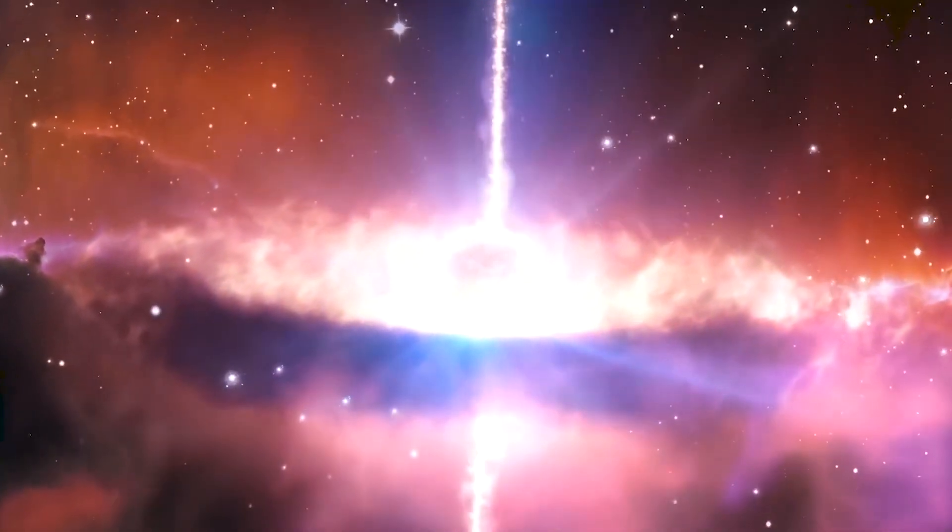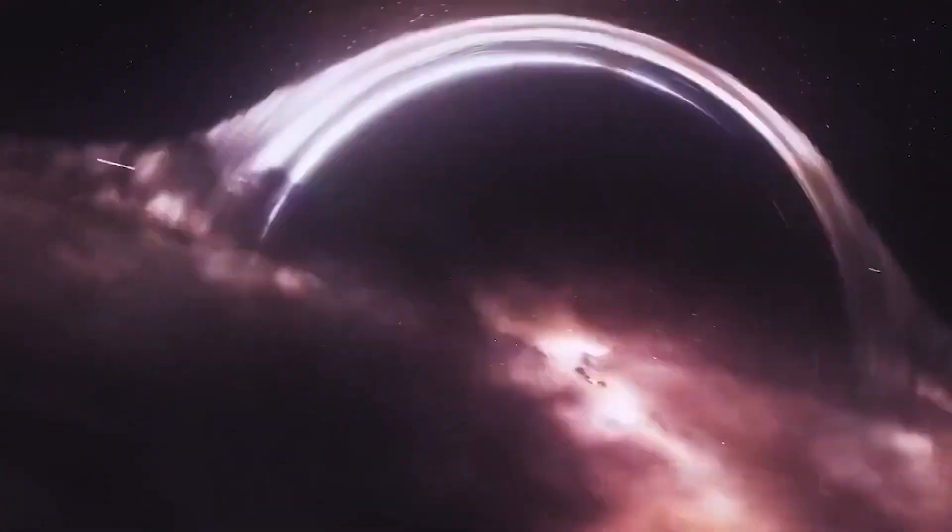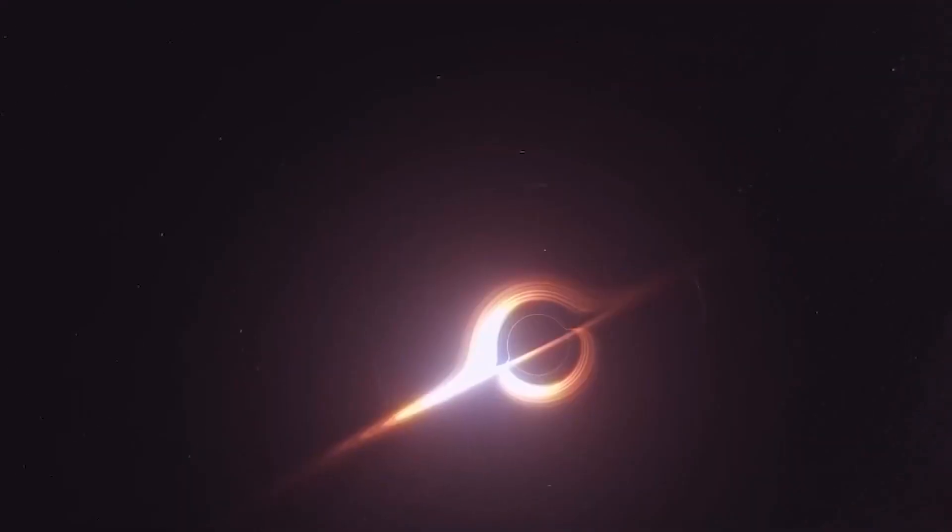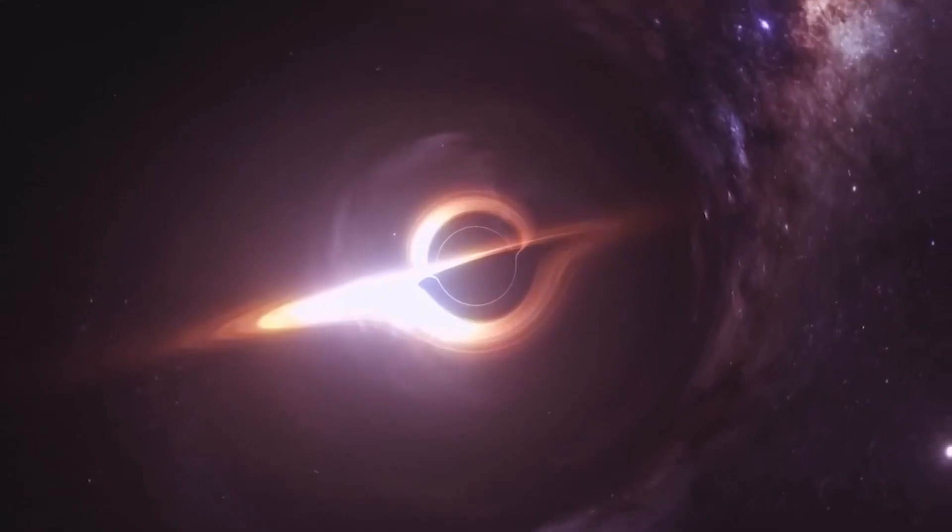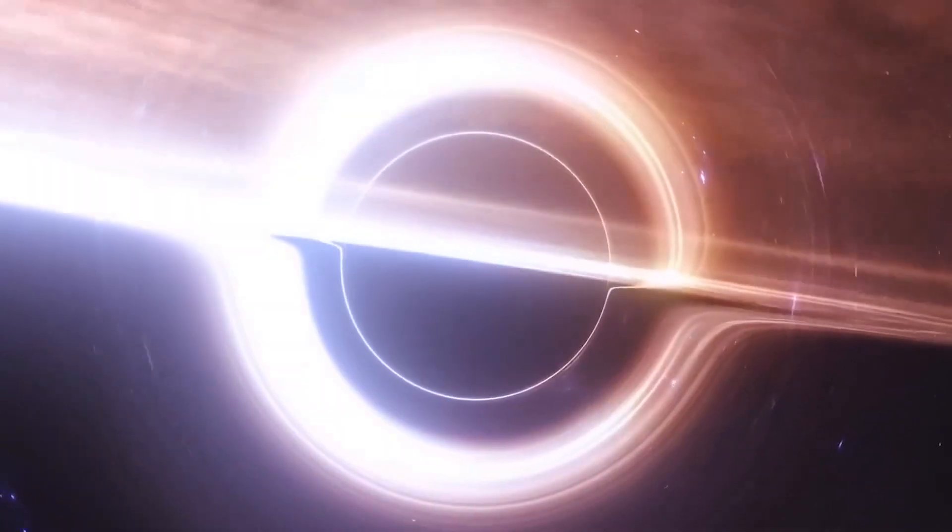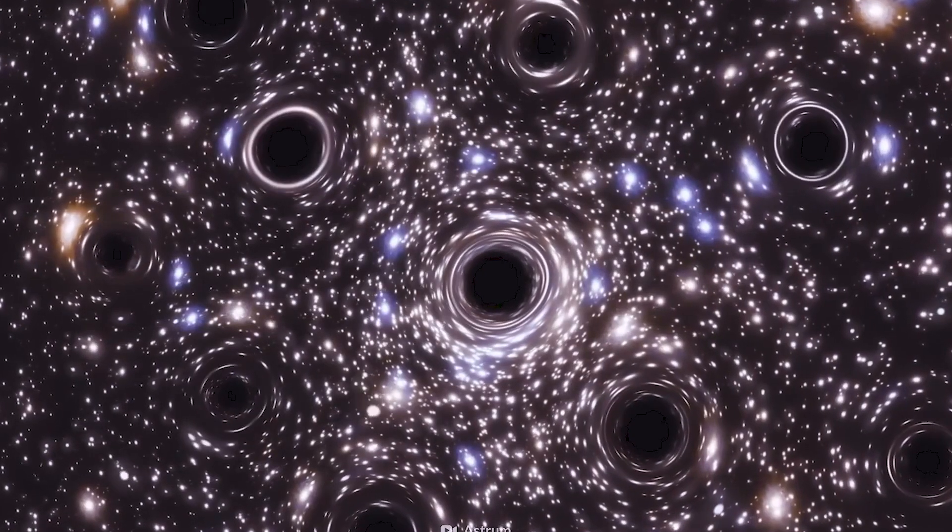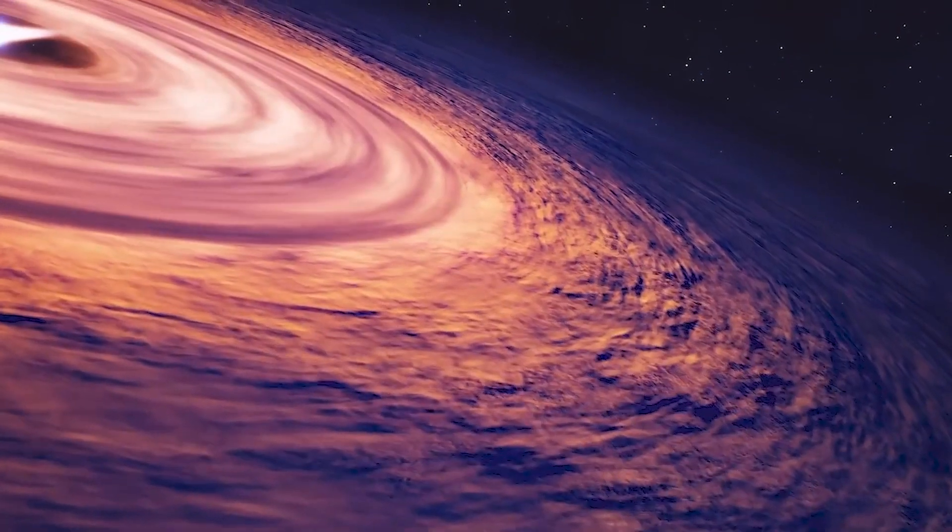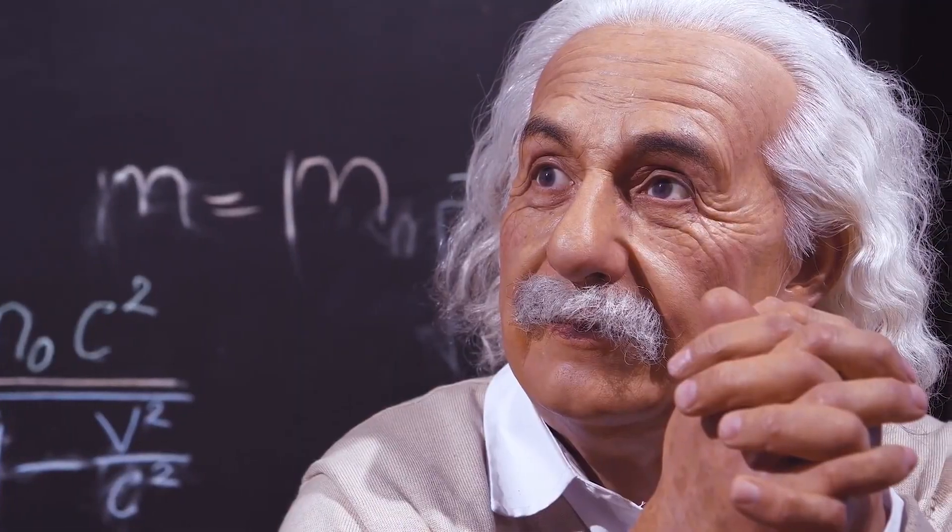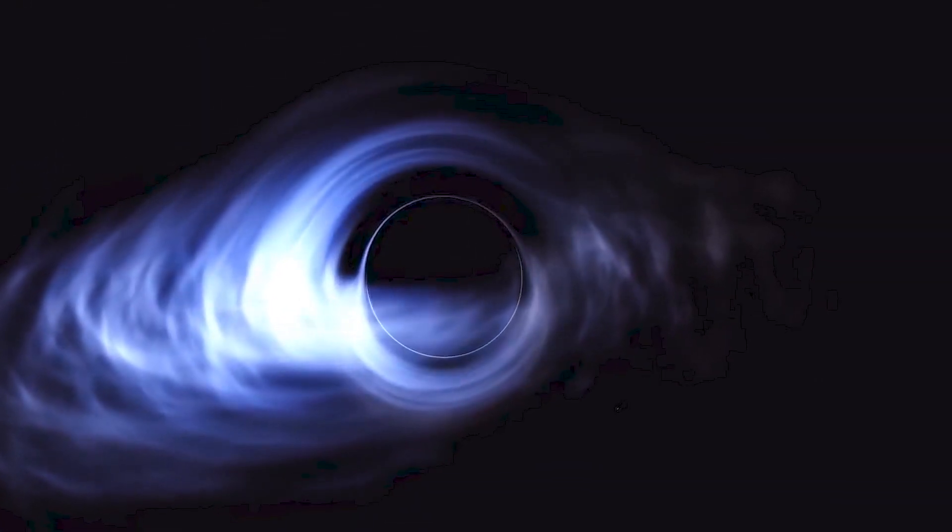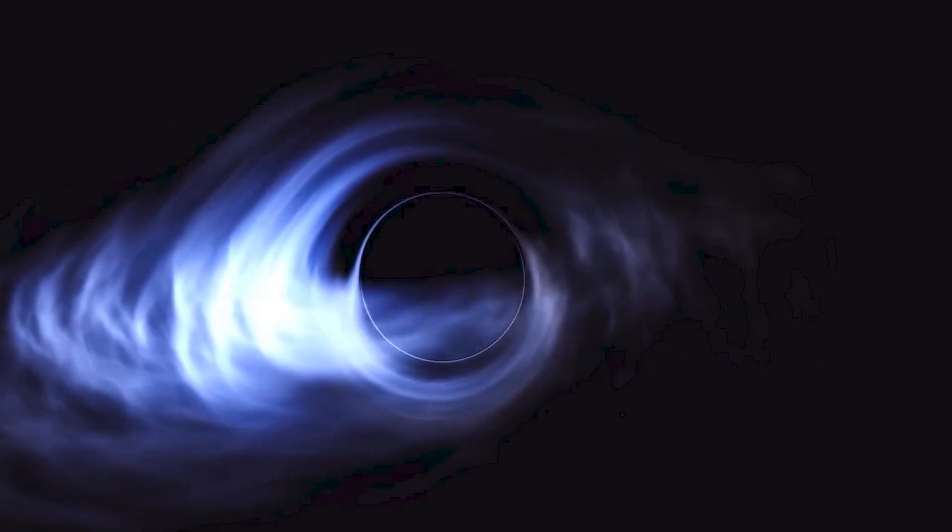Moreover, the concept of black holes has faced challenges from alternative theories of gravity. Modified gravity theories suggesting adjustments to Einstein's theory of general relativity propose different gravitational behaviors under extreme conditions. Instead of a complete gravitational collapse leading to a black hole's singularity, these modified gravity theories allow for other outcomes, such as a gravitational collapse halting at a certain point.